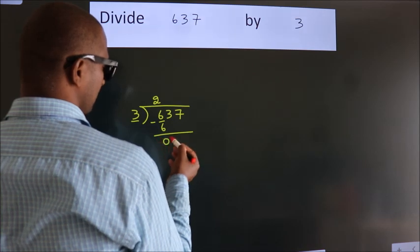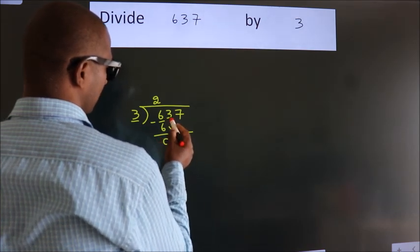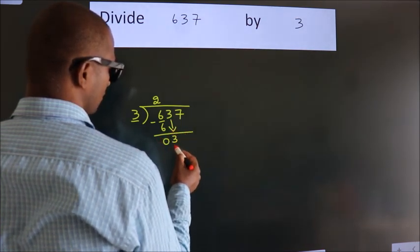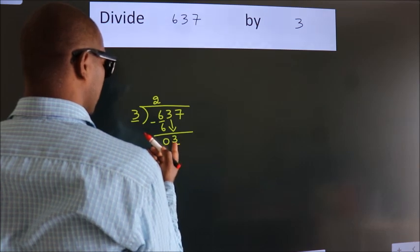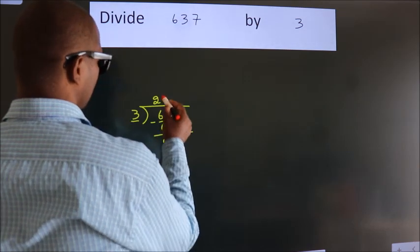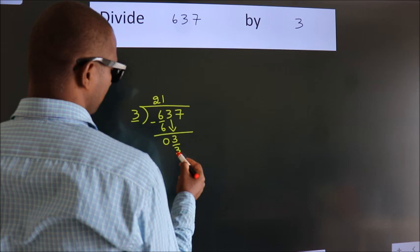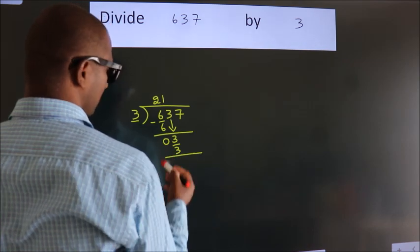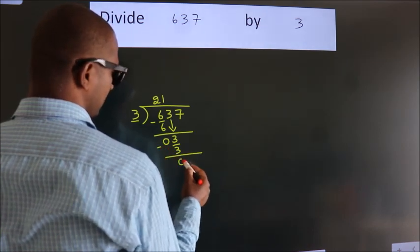After this, bring down the beside number. So, 3 down. When do we get 3? In the 3 table, 3 times 1 is 3. Now, we subtract, we get 0.